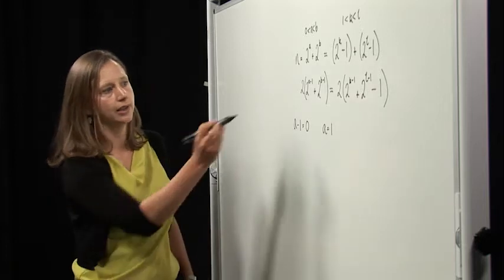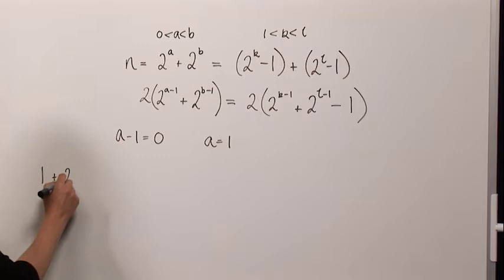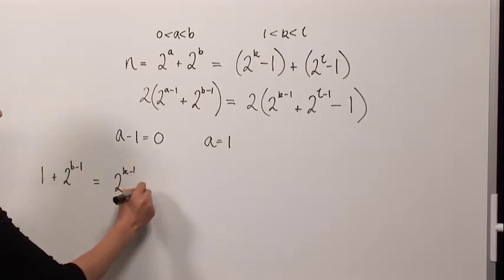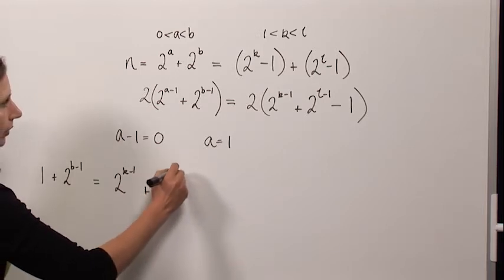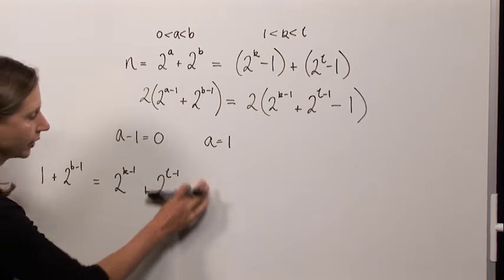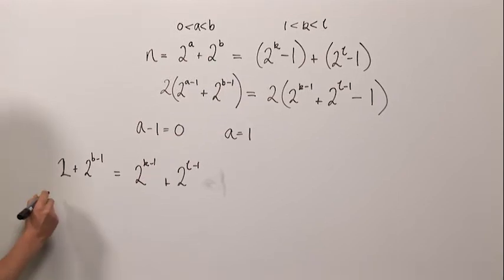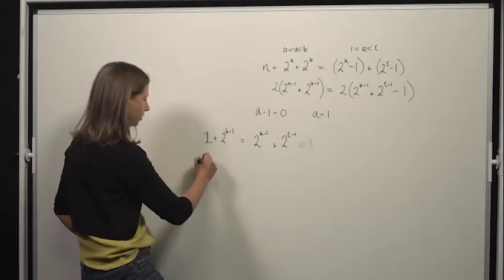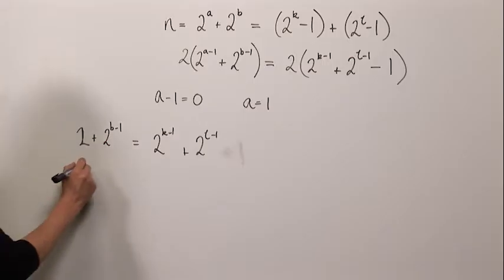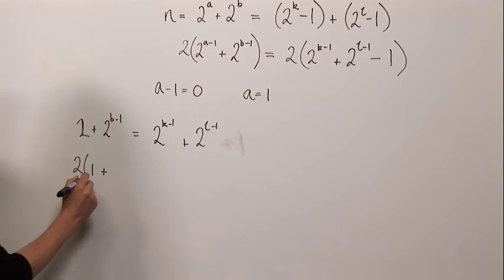Okay, I'm going to take the two brackets here, we've got one plus two to the b minus one is equal to two to the k minus one plus two to the l minus one minus one. And I'm going to add one to both sides, excuse the mess, to get this, and we can do a very similar trick. I'm going to take out a factor of two, which we know that we can do because we've got the conditions on b and k and l.